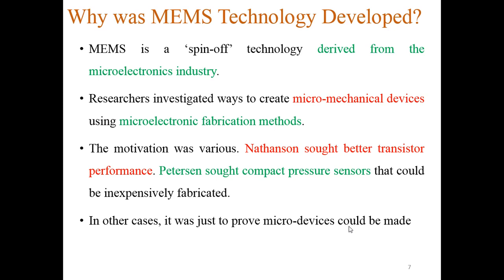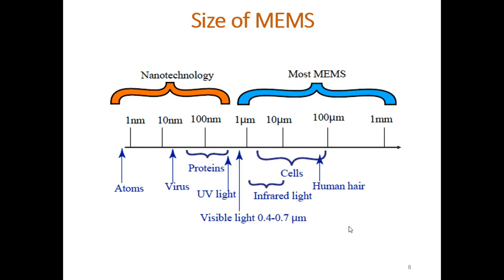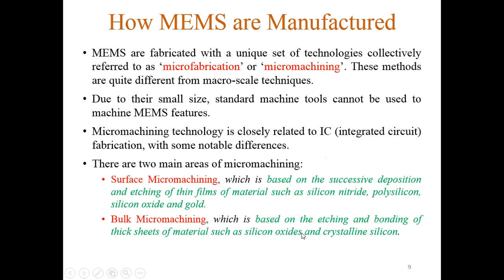Initially we had large mobile phones, then progressively smaller ones. According to Moore's Law, we are including an increasing number of transistors in a very small chip. Regarding the size scale of MEMS: up to the wavelength of visible light is nanotechnology, and from visible light up to one millimeter is the range where most MEMS devices fall.